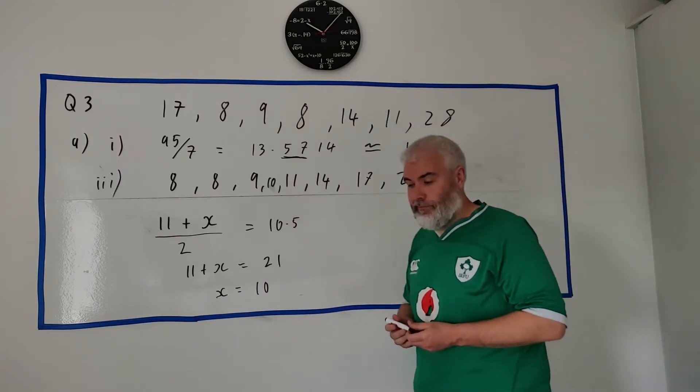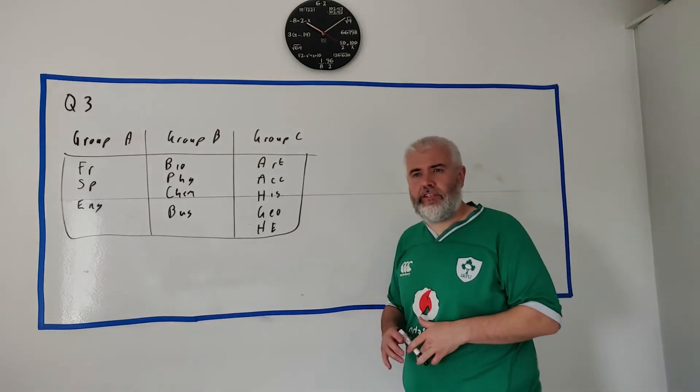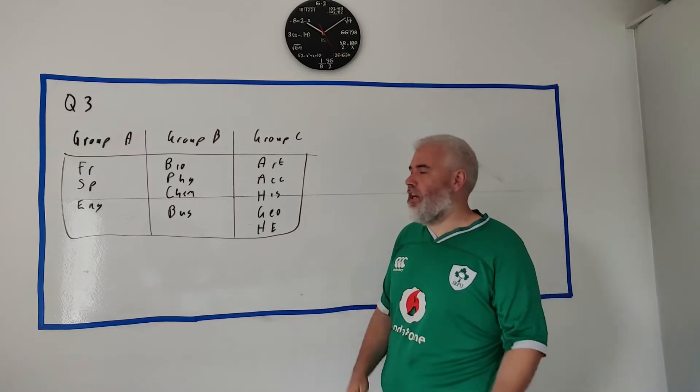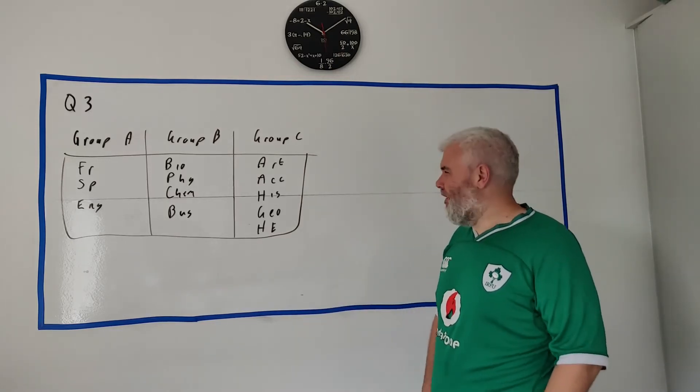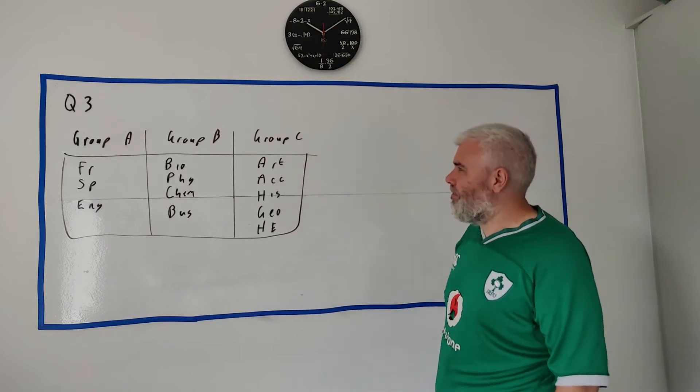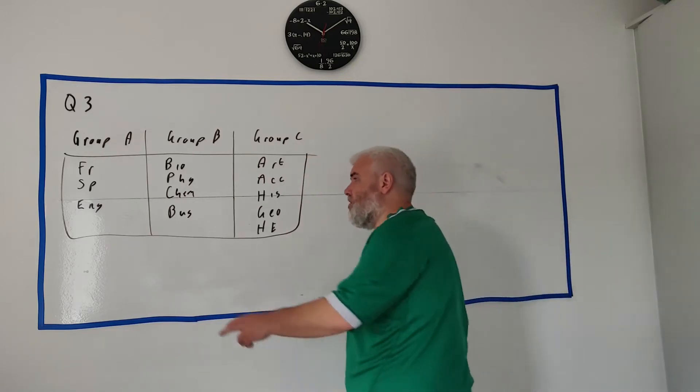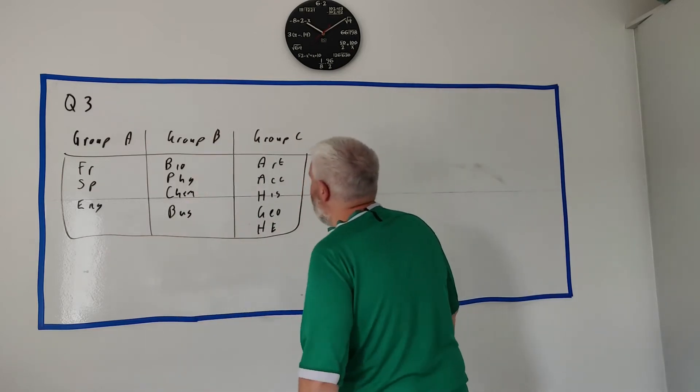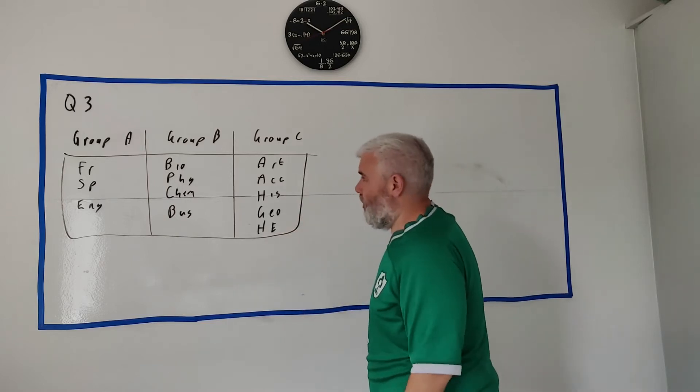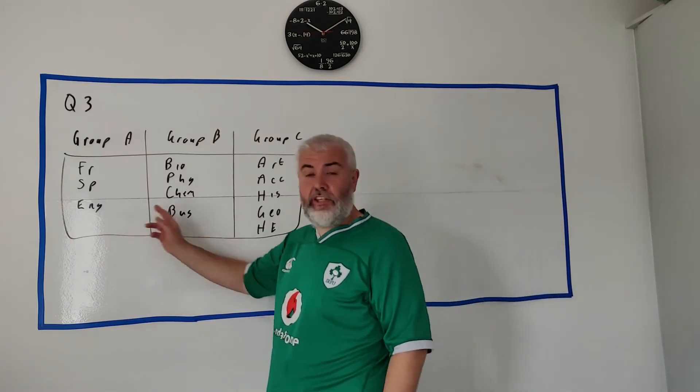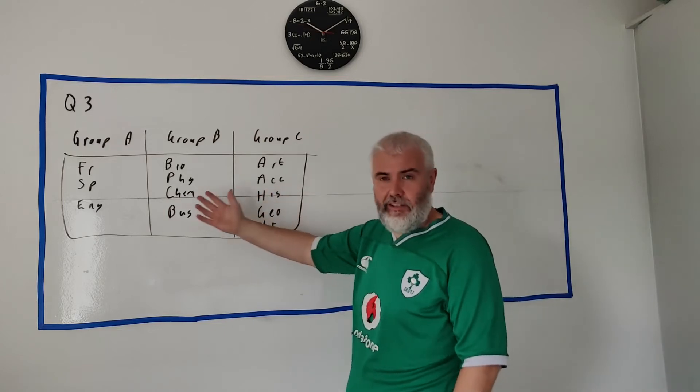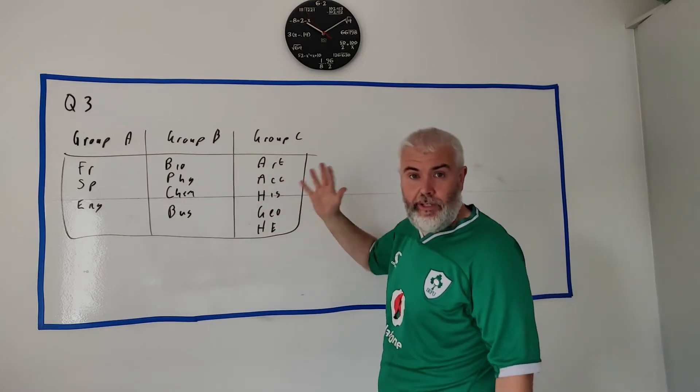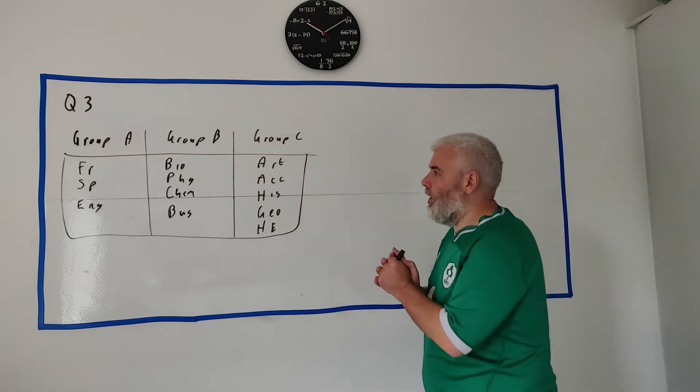Okay, part b is a counting question. Counting always sounds so simple, but then you see the questions and you're like, oh, counting's not simple anymore when we get some big numbers. So we have a group of subjects - this might be combinations. In school you have to pick a language, you have to pick a science, business is in here, and you have to pick some extra subjects as well. So this student needs to pick one from each group. It's an anonymous question - we just need to pick one from each group. How many possible combinations are there of subjects?